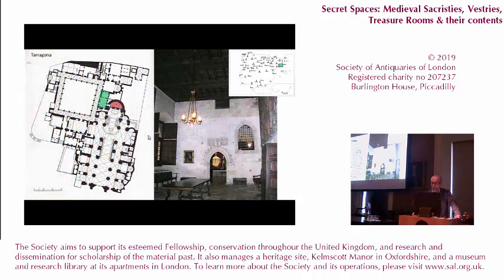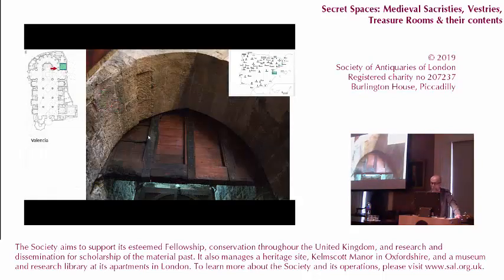Moreover, these new sacristies, perfectly planned from the start, were also able to include an upper story that could serve as a treasury or living quarters for the guardians of the sacristy. In Tarragona, the oldest sacristy was relocated, creating a new storage space that functioned as a treasury and the living quarters of the treasurer, with its own window that enabled him to keep watch on the entrance and even defend it.